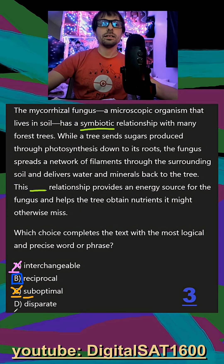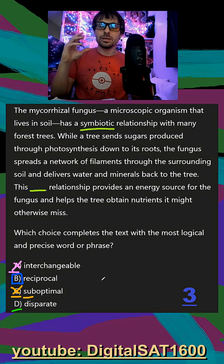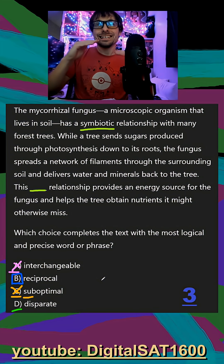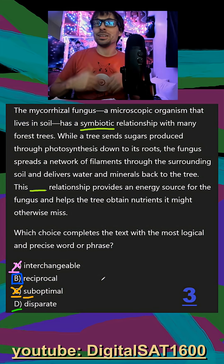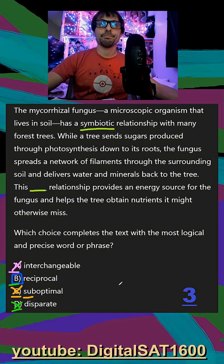Finally, in D, 'disparate' is the complete opposite direction we want to go. We wanted a positive word describing two things with a beneficial relationship for each other. A disparate relationship would mean they're very different from each other. So we can get rid of D and finalize B as our answer.